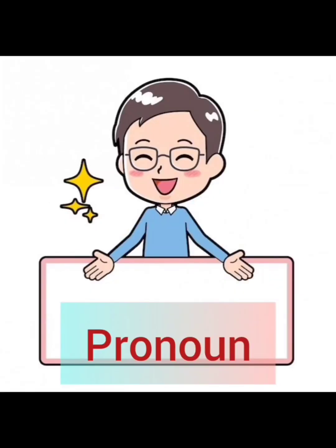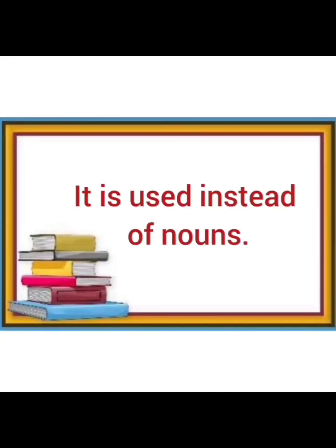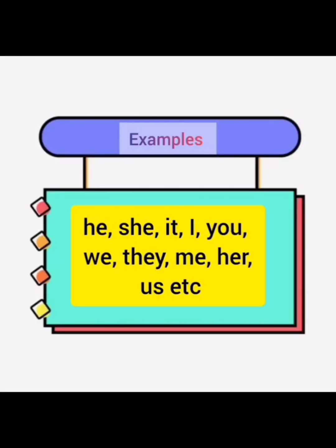A pronoun is a word that is used in place of a specific noun or noun phrase mentioned earlier in a sentence, to avoid the repetition of that particular noun or noun phrase. Simply, it is used instead of nouns. For example: he, she, it, I, you, we, they, me, her, us, etc.